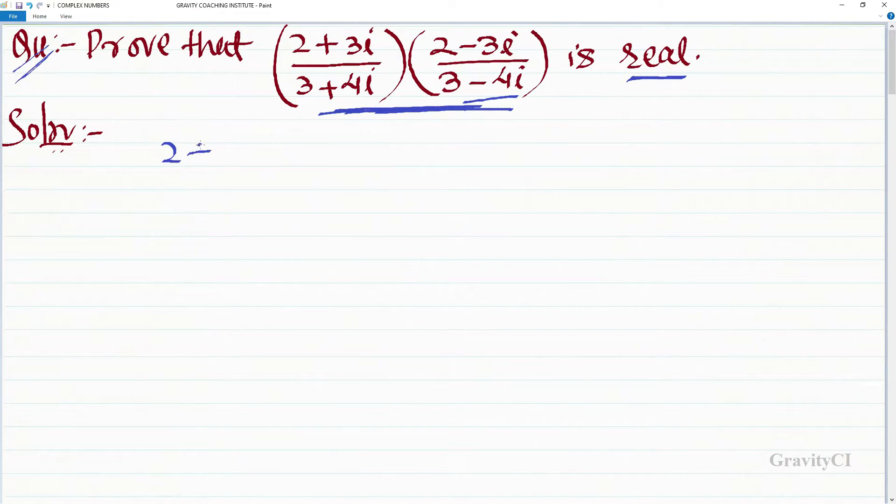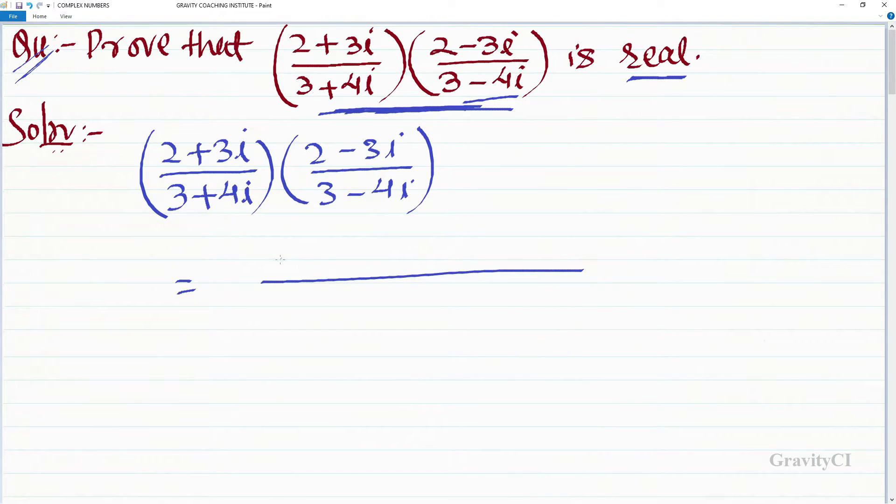The question is (2 plus 3 iota upon 3 plus 4 iota) multiplied by (2 minus 3 iota upon 3 minus 4 iota). This is simply numerator to numerator and denominator to denominator.